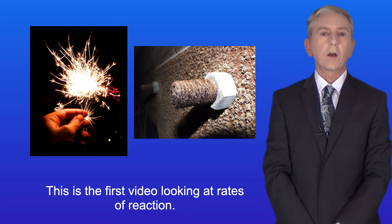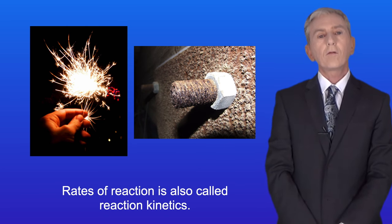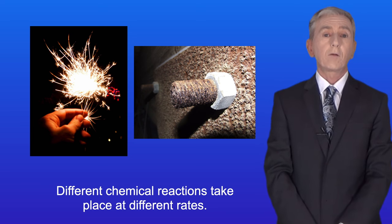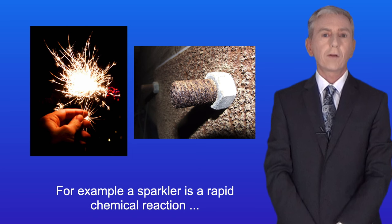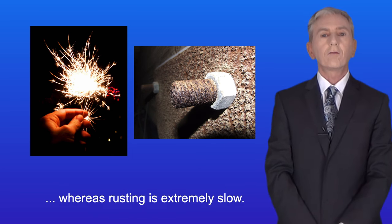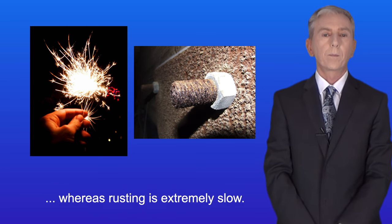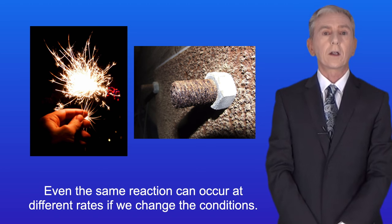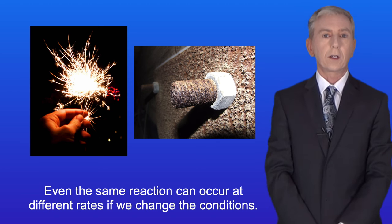This is the first video looking at rates of reaction. Rates of reaction is also called reaction kinetics. Now different chemical reactions take place at different rates. For example, a sparkler is a rapid chemical reaction whereas rusting is extremely slow. And even the same reaction can occur at different rates if we change the conditions.